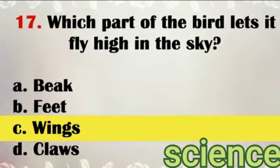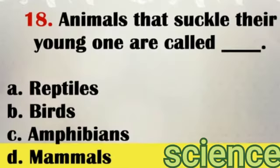Question number 17: Which part of the bird lets it fly high in the sky? Answer: Wings. Question number 18: Animals that suckle their young ones are called? Answer: Mammals.